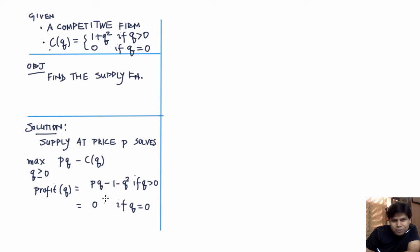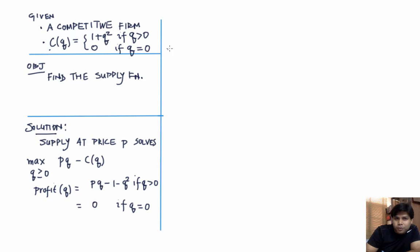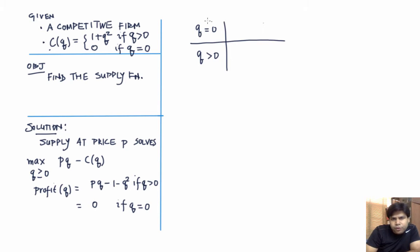We want to maximize this profit expression with respect to Q. When Q is positive, profit is a concave function; when Q is 0, profit is 0. But plugging Q = 0 into the positive-branch expression gives minus 1, so profit is discontinuous at 0. To handle this, we divide the choice set into two subsets: Q = 0 and Q strictly positive.